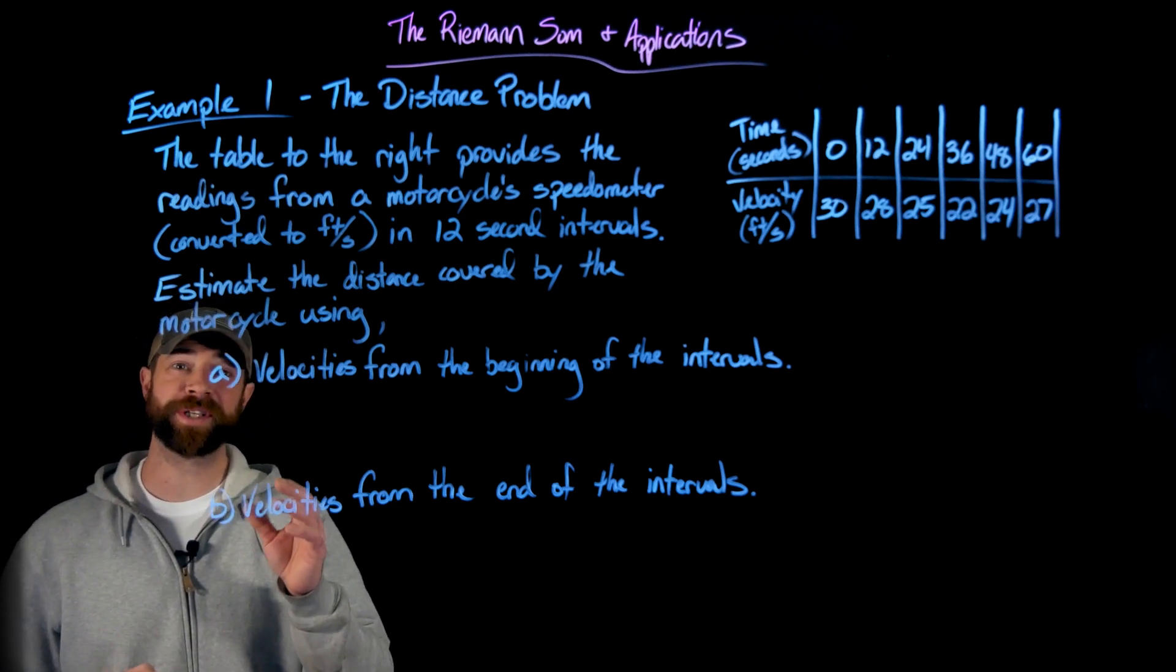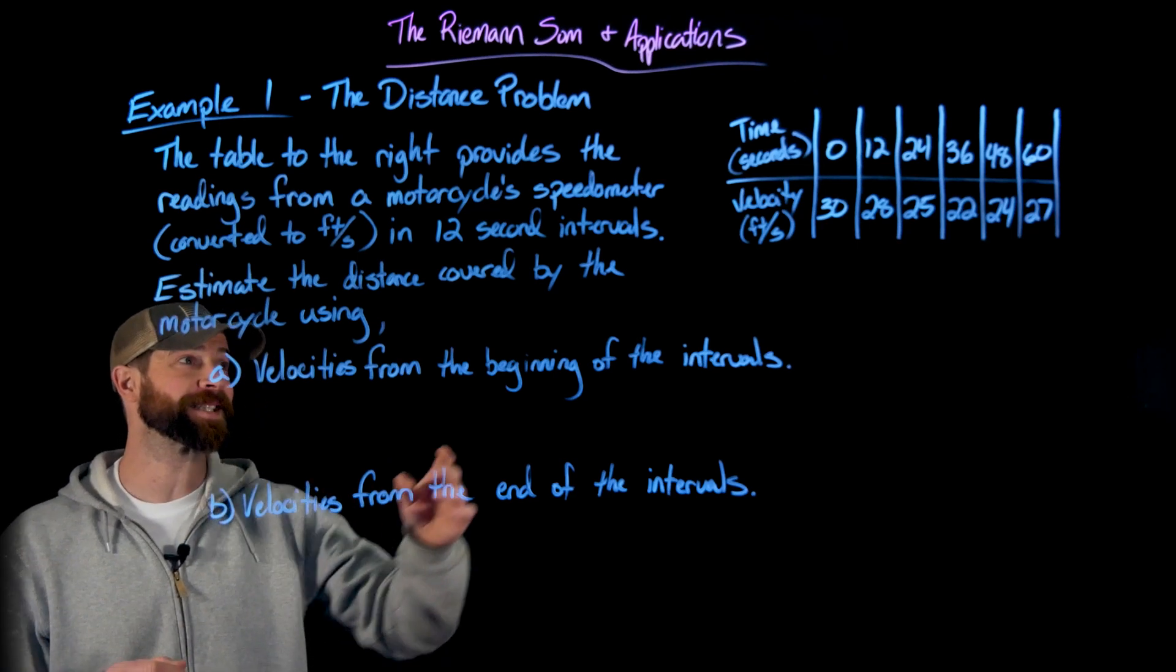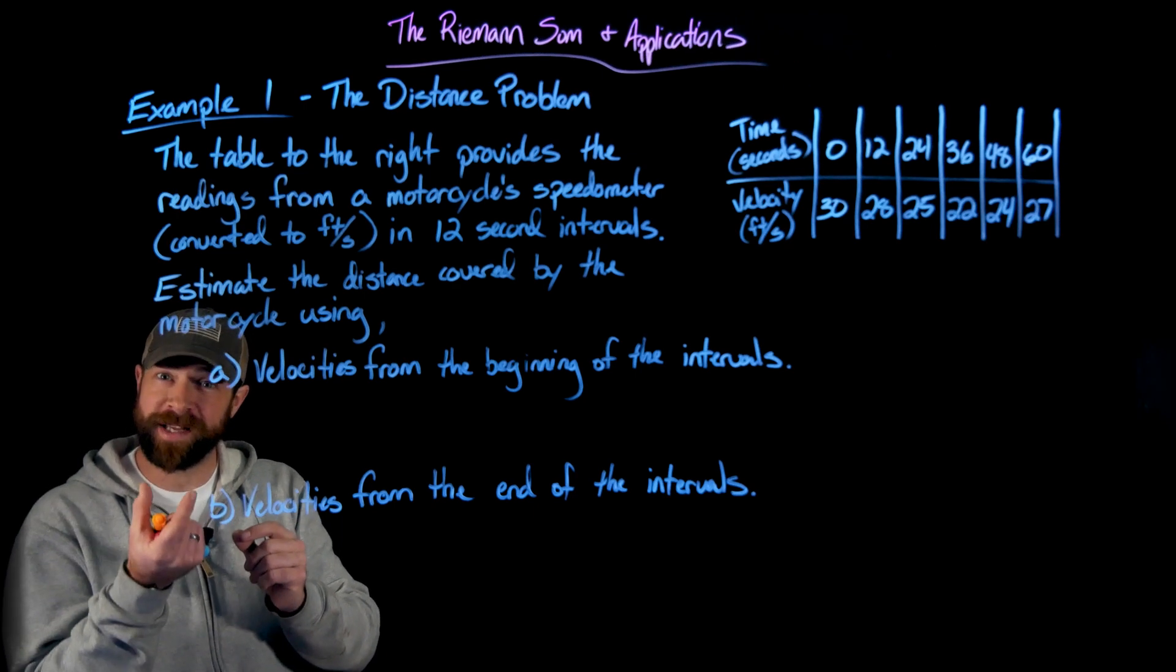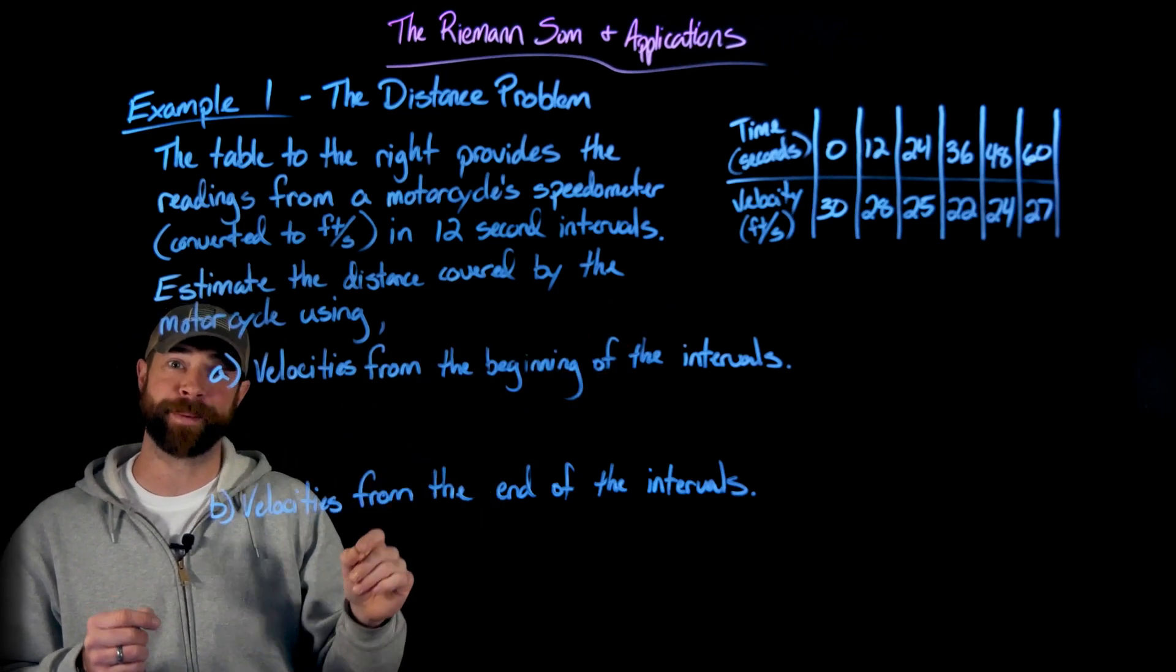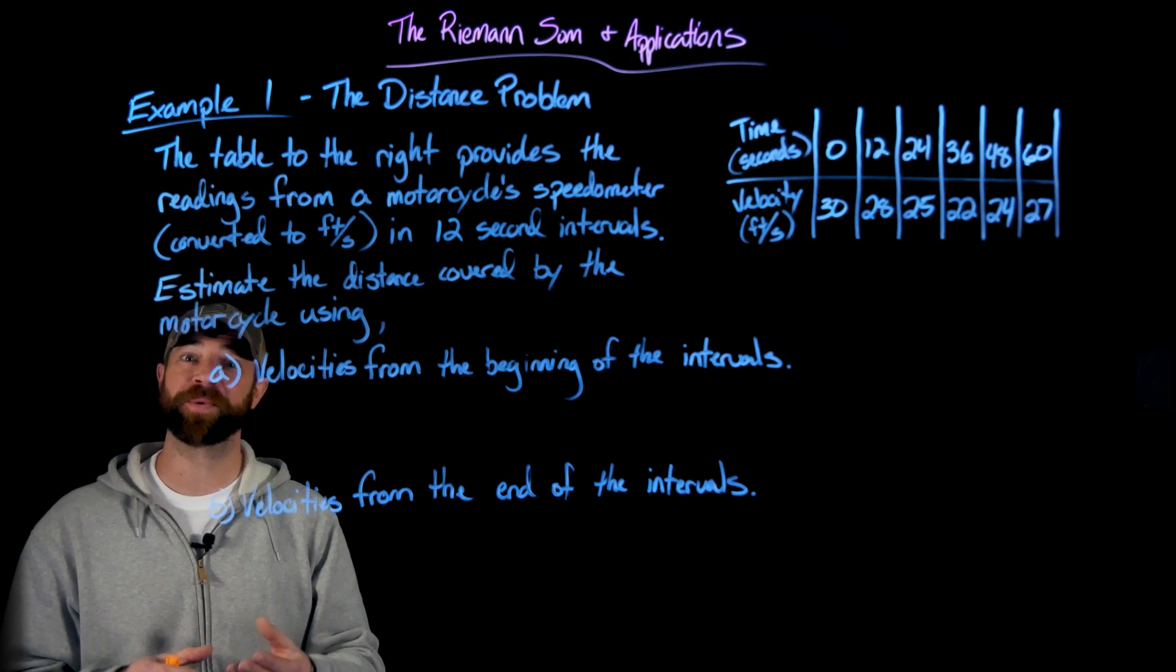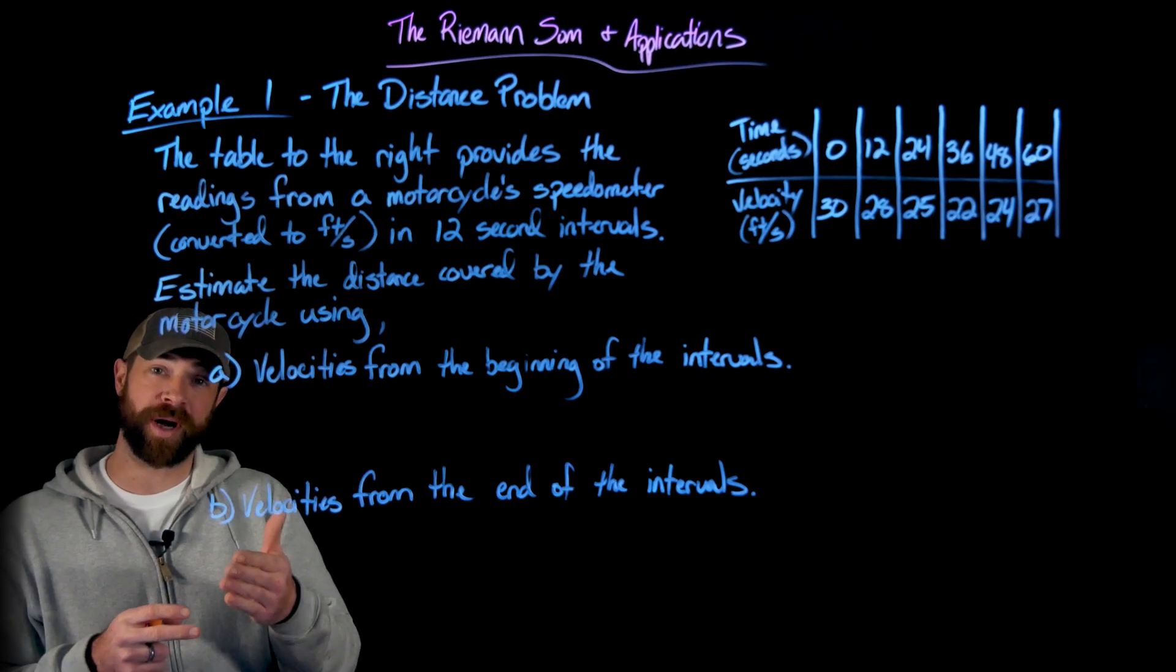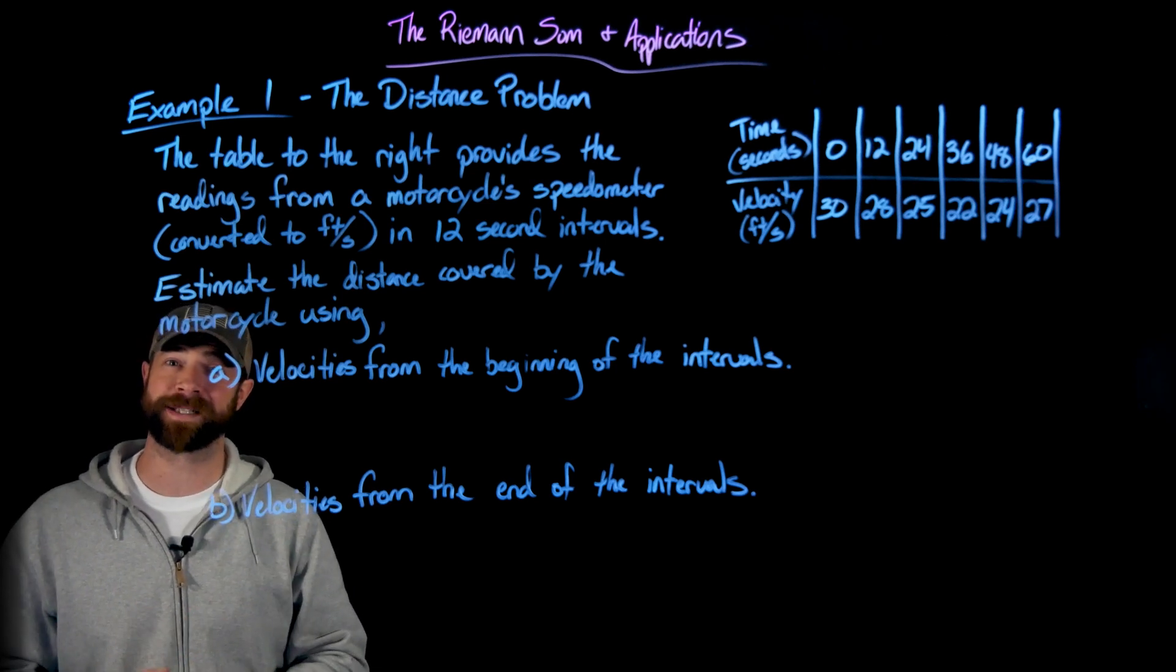So specifically in this context, we're given speedometer readings every 12 seconds from this motorcycle. We've converted these from miles per hour into feet per second, just so it's easier to do the math with seconds. And so what we're going to do is we're going to estimate the distance traveled by first using the velocities from the beginning of the intervals. So for instance, in this first interval from zero to 12 seconds, this bike was going 30 feet per second at zero seconds. We're going to use that representation of 30 feet per second for the whole first interval, and then going down for all the intervals in exactly the same way. Then what we're going to do is take the velocities from the ends of the intervals. And hopefully that you can see the connection to this between the approximations we use for the left and the right.